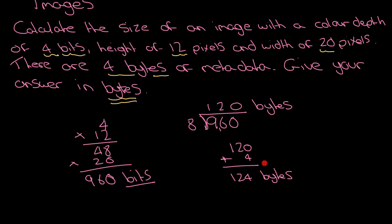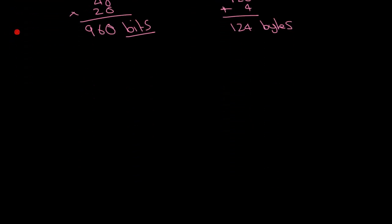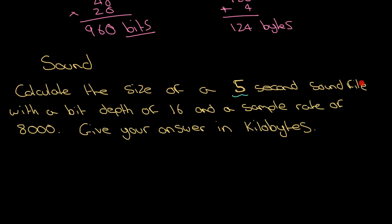Sound then. This is going to show how if you get a question around sound, you're dealing with much larger numbers usually. Calculate the size of a 5-second sound file with bit depth of 16 - so each sample is going to be 16 bits large - and a sample rate of 8,000. Typical sample rates for sound files: 8,000 if it's really poor quality, 44,000 if it's okay quality. I've chosen 8,000 just to try and keep things simple.